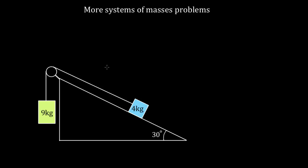To show how powerful this approach is of treating multiple objects as if they were a single mass, let's look at this one. We've got a nine kilogram mass hanging from a rope, and that rope passes over a pulley, then it's connected to a four kilogram mass sitting on an incline at 30 degrees. The coefficient of kinetic friction between the incline and the four kilogram mass is 0.2, so there's gonna be friction as well.